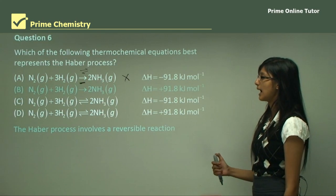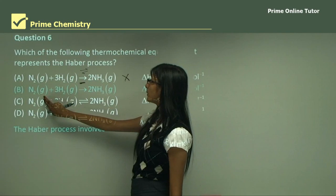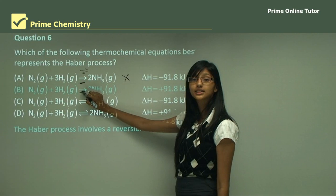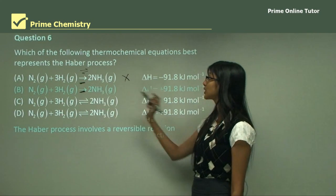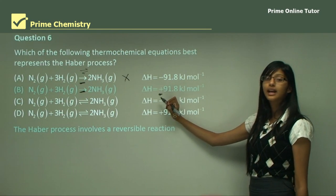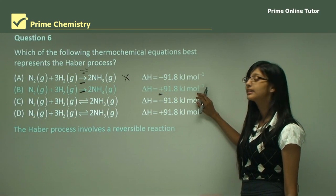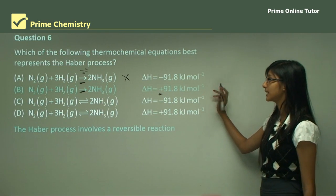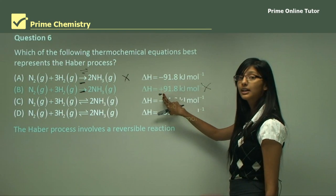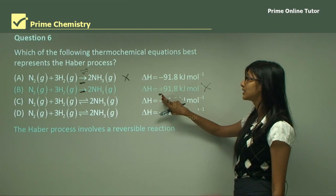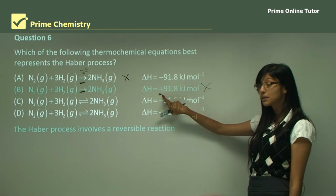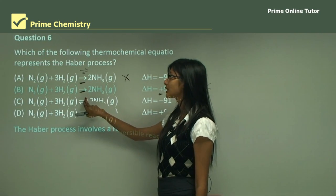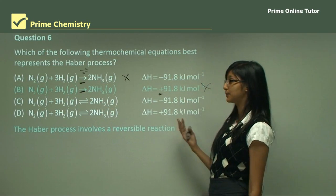Option B also shows two molecules of nitrogen plus three molecules of hydrogen forming ammonia, but again does not show an equilibrium reaction. Furthermore, it shows a positive enthalpy value, meaning it indicates an endothermic reaction — but the Haber process is exothermic, so the sign should be negative. It is wrong on both counts: it lacks the equilibrium arrows and has the wrong sign for enthalpy.